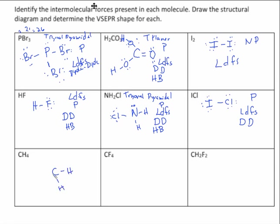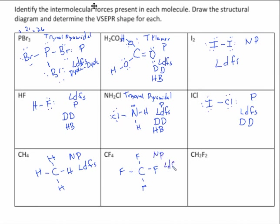CH4: if you draw it, it's tetrahedral, but all four things are the same, so it's non-polar. Non-polar only has London dispersion forces. CF4: if you draw it, it's also tetrahedral and non-polar, so it has London dispersion forces only.